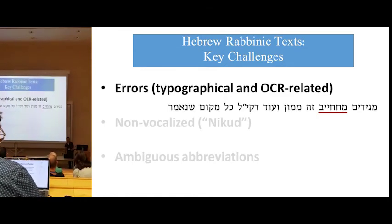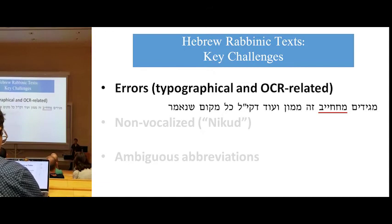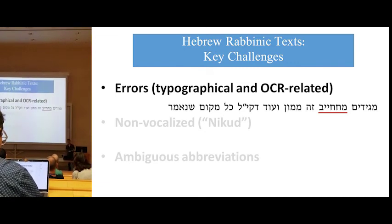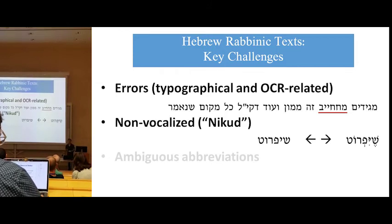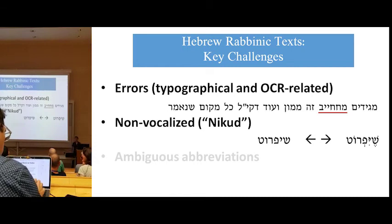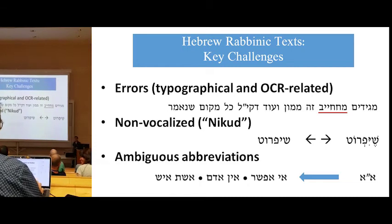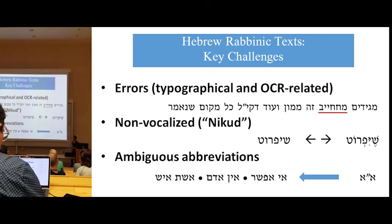We were met with three key challenges when processing these texts. The first key challenge is that the existing digital corpora suffer from many errors, both typographical and OCR related. The second key challenge is that the texts were not vocalized — that is, they did not have nikud. The third key challenge is that the texts contained many abbreviations, many of which are ambiguous.